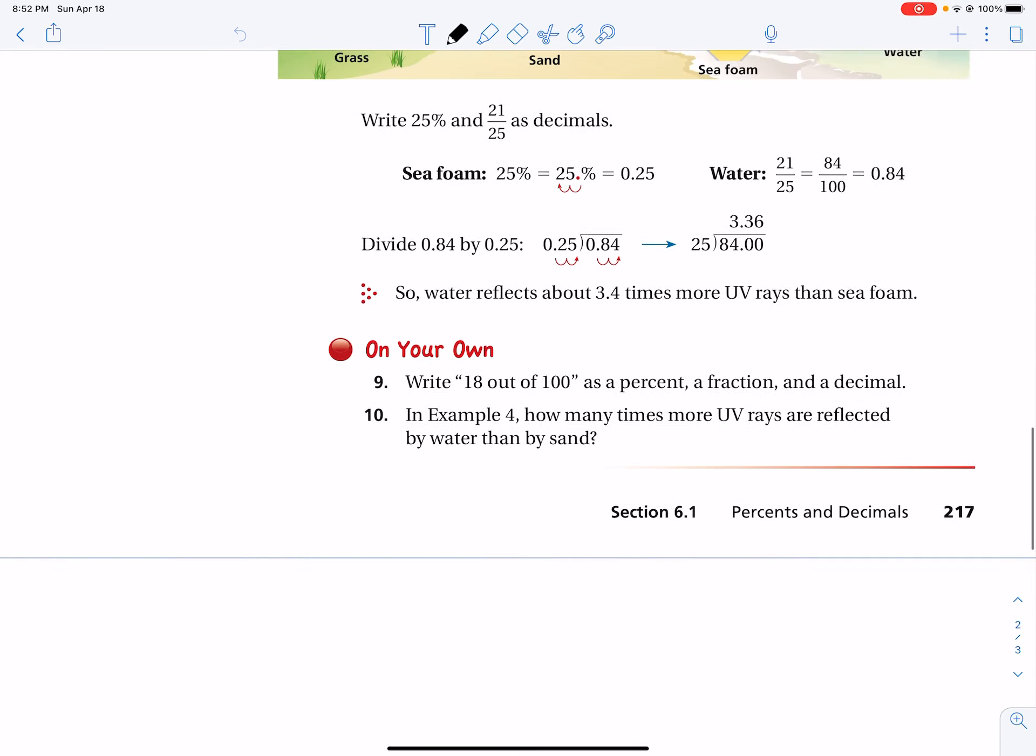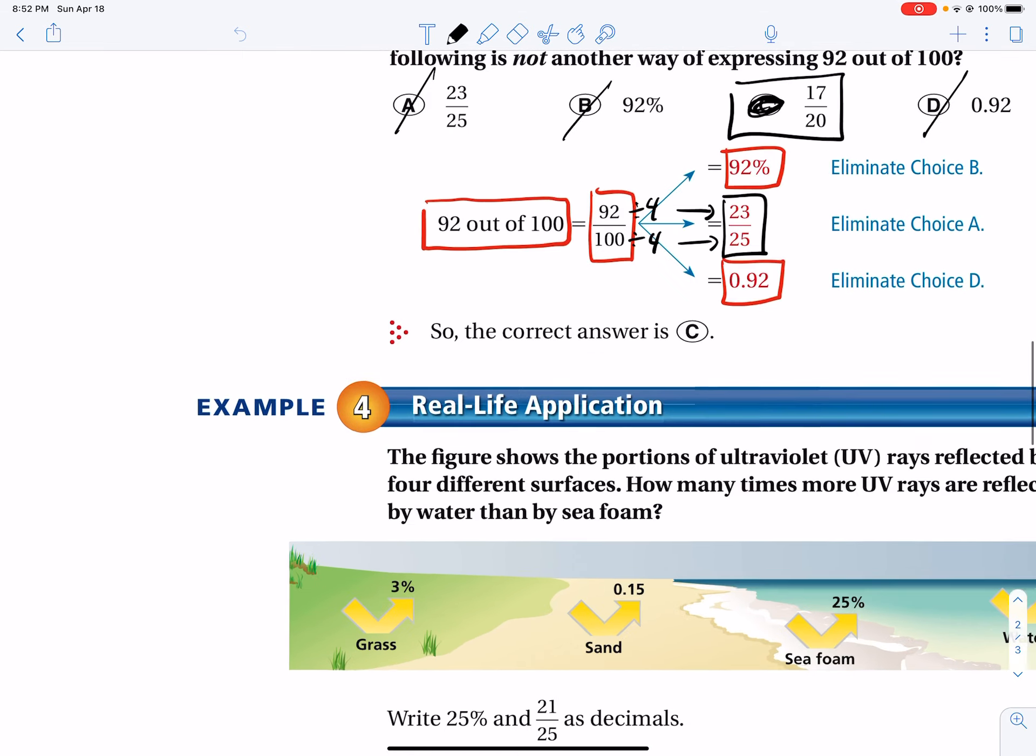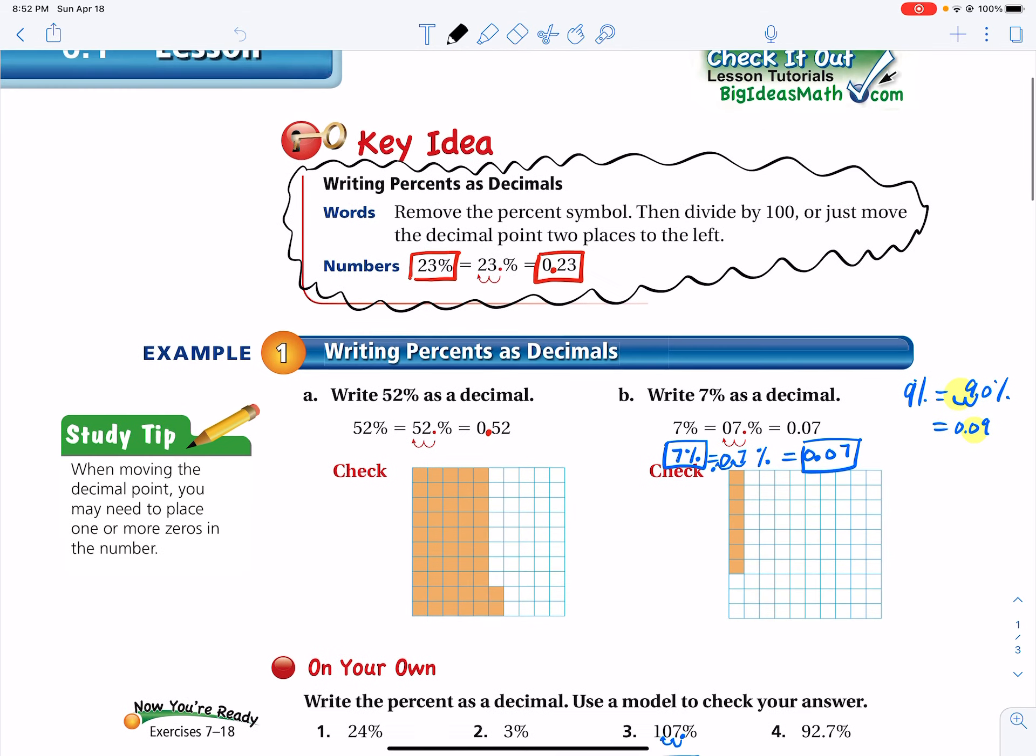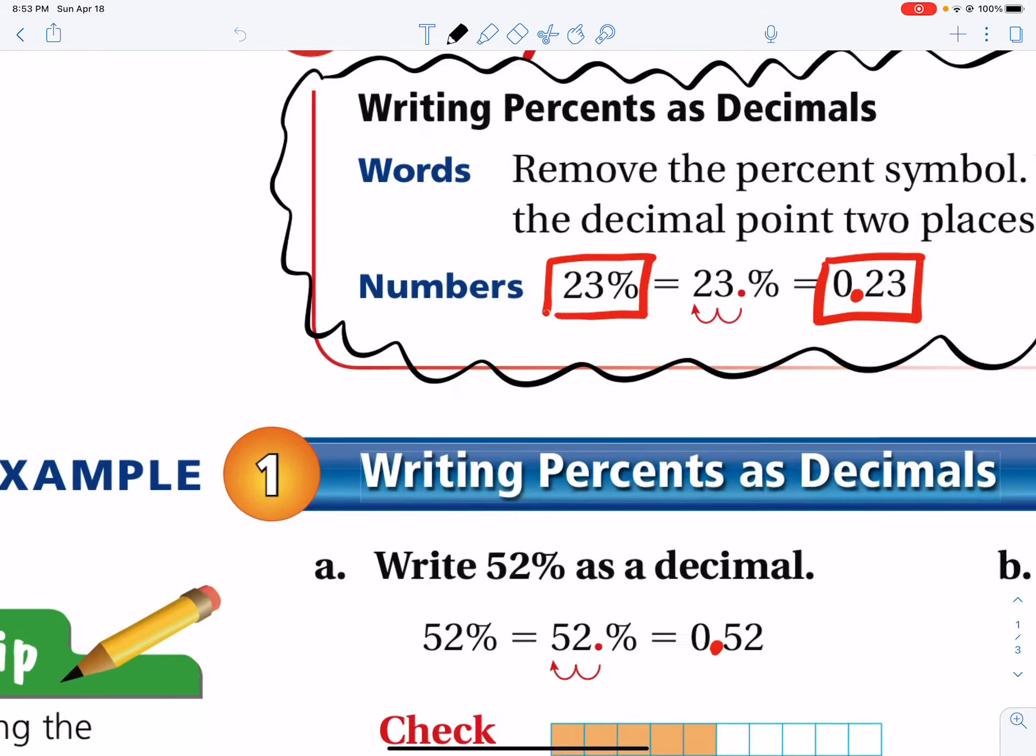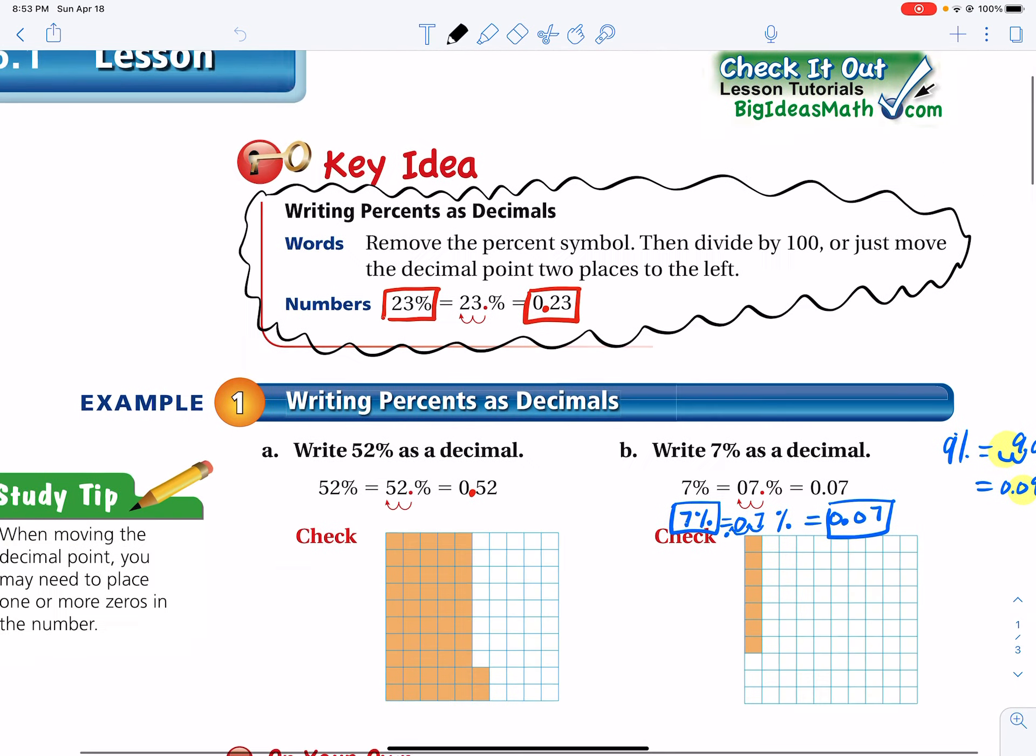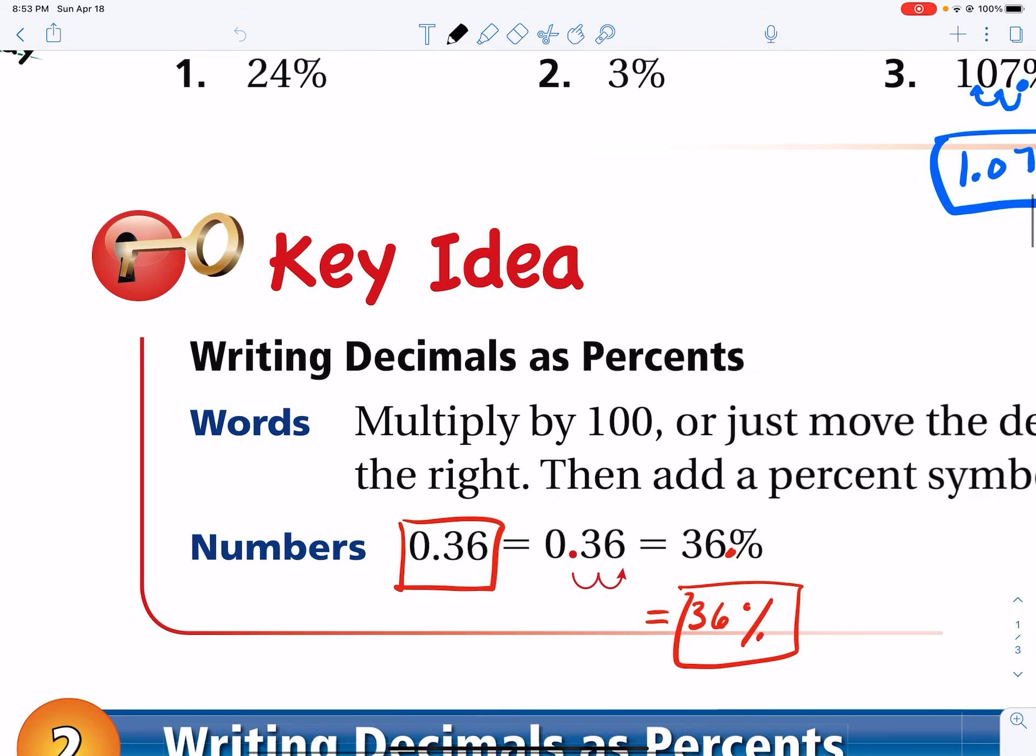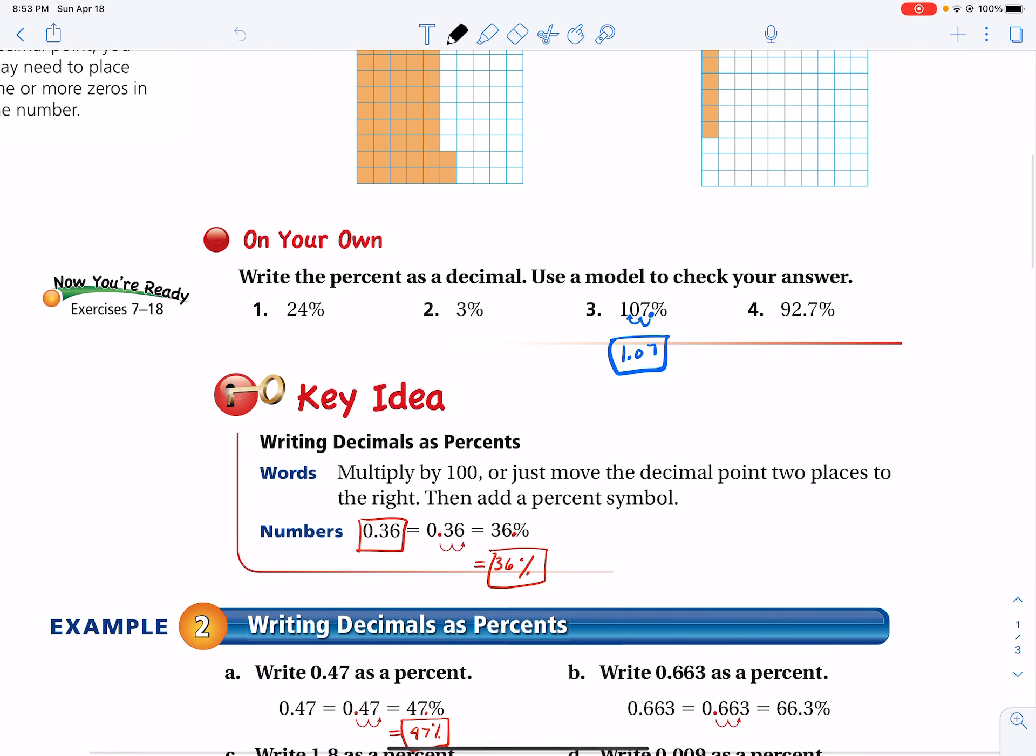And yeah, I think that's it. Those are the examples that we wanted to talk about. And so, remember two key concepts. When you move a decimal to the left, you are changing the percent to a decimal. And when you move a decimal to the right, two places, you're changing the decimal to a percent. So I hope that helps. Like I always say, study hard, learn a lot. We'll see you soon. Bye-bye.